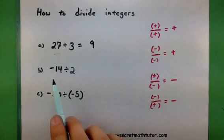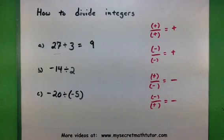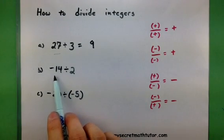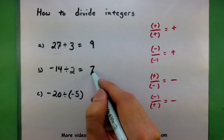Let's move on to B. Here I have a negative 14 divided by a positive 2. So first, take care of the division. Think, what is 14 divided by 2? And come up with your answer: 7.